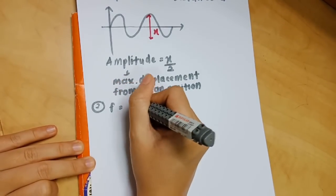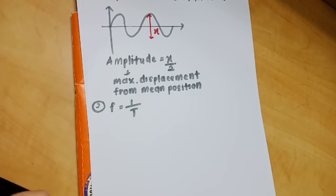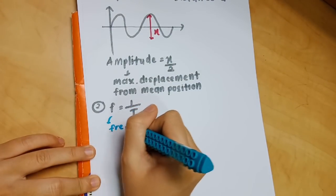The second formula is f equals 1 over t. F refers to frequency and t is the time taken for one complete oscillation.